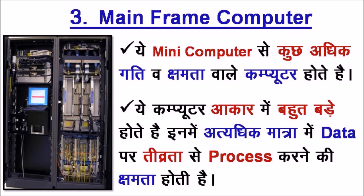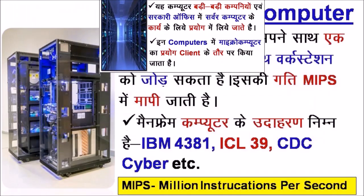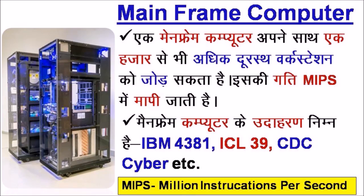तीसरा है Mainframe Computer — ये Mini Computer से कुछ अधिक गति व क्षमता वाले Computer होते हैं। ये Computer आकार में बहुत बड़े होते हैं, इनमें अत्यधिक मात्रा में Data तीव्रता से Process करने की क्षमता होती है। ये Computer बड़ी-बड़ी कंपनियों एवं सरकारी Office में Server Computer के कार्य के लिए प्रयोग में लिये जाते हैं। इन Computer में Micro Computer का प्रयोग Client के तौर पर किया जाता है। एक Mainframe Computer अपने साथ एक हज़ार से भी अधिक दूरस्थ Work Station को जोड़ सकता है। इसकी गति MIPS यानी Million Instructions Per Second में मापी जाती है।